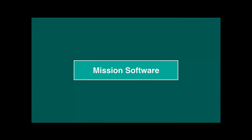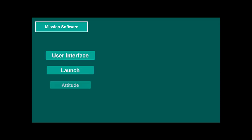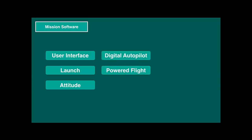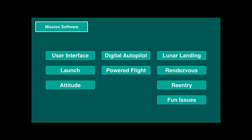As we now have a good overview of architecture, hardware, peripherals, and system software, it's time to review the practical use on a mission to the moon. We will look at the user interface, the launch sequence, and once in orbit, the attitude and orbit determination. Further, we will understand how the digital autopilot works and how powered flight is performed. As soon as we reach the moon, we look at the lunar landing and the lunar rendezvous after liftoff, and finally re-entry into Earth's atmosphere, and last but not least, contingencies — or as we like to call them, fun issues.